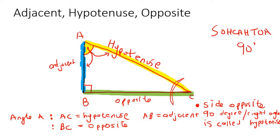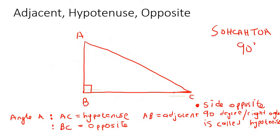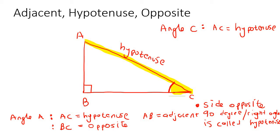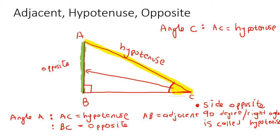Now if we had to go and stand at angle C, then it would be totally different. So let's do that now. This side over here is still going to be called the hypotenuse, because the hypotenuse is always opposite the 90 degrees — that has not changed. Now if you look opposite that angle, you would see side AB, so AB is called the opposite. The other side, BC, is going to be the adjacent — the one that's left over.